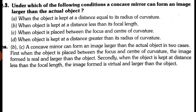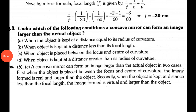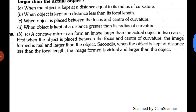When the object is beyond C, the image forms between focus and center of curvature — that is not magnified. Magnified images form in two cases: when the object is between C and F, and when the object is between F and P. So the answer is option B and C. These types of questions are important in board exams.